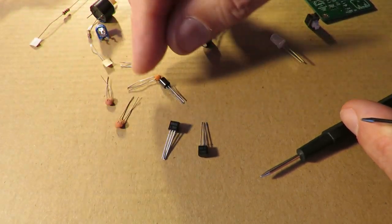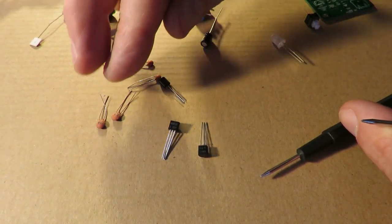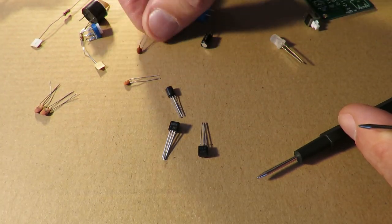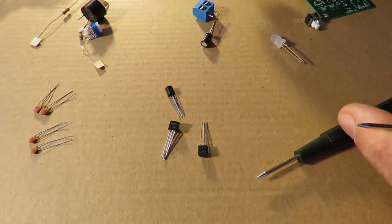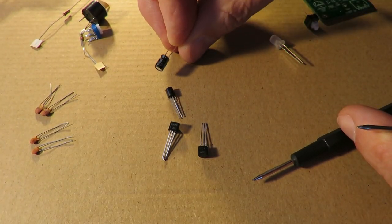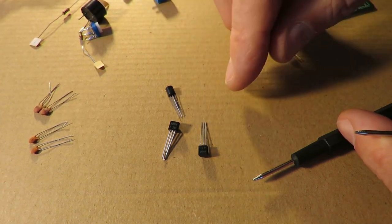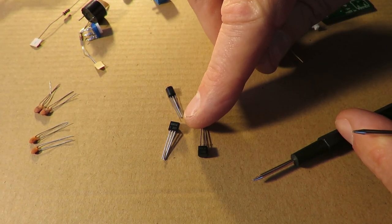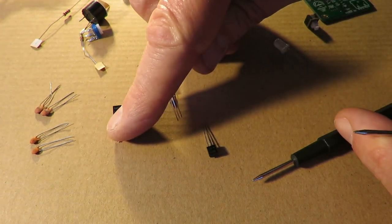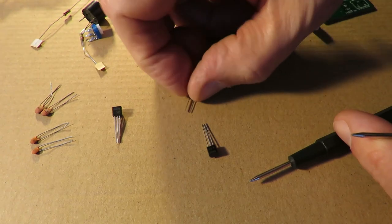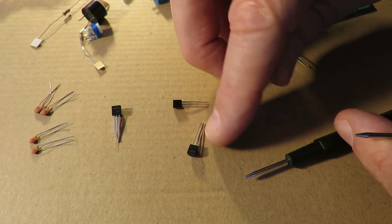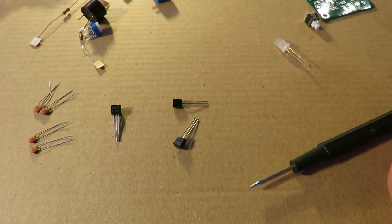That capacitor is a 104. So those must be the 222s. Yep, 222s. That's the electrolytic 100uF. Transistors - that's the 9018 and then two 9012s. Yeah, that looks fairly straightforward.